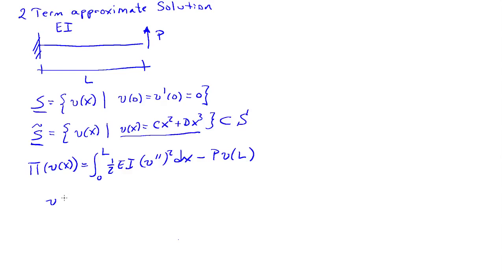My approximation function is Cx squared plus dx cubed. C and D are unknown parameters, so we need derivatives. V prime is 2Cx plus 3dx squared, and V double prime equals 2C plus 6dx.